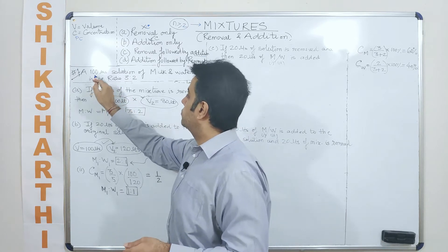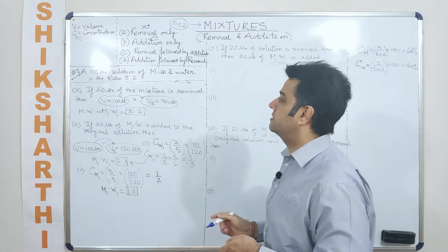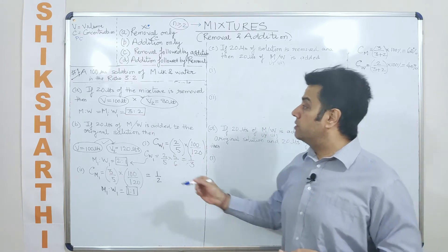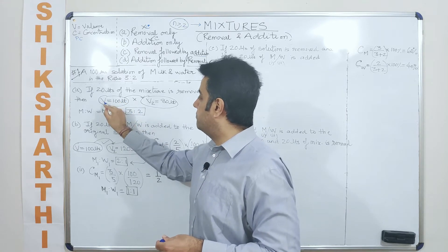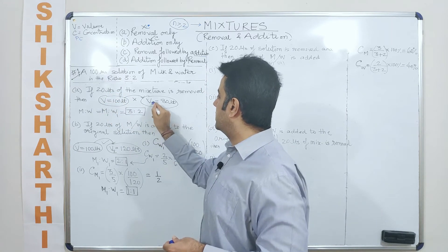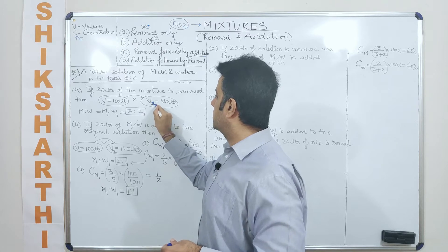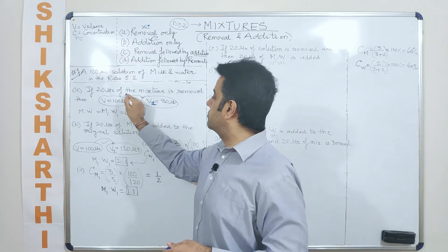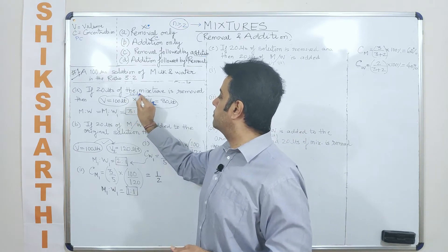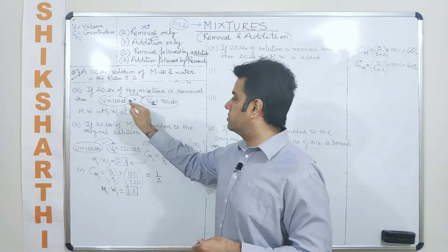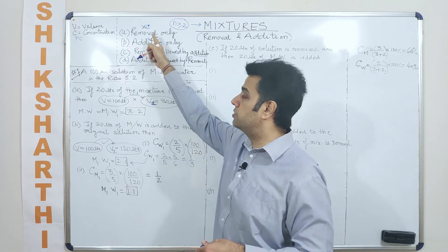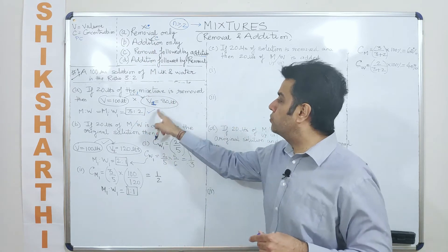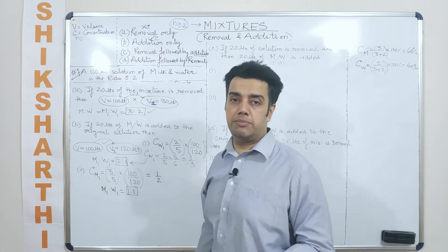In the first case, a 100-liter solution of milk and water is taken in the ratio 3:2. This is the original volume V. In V1, the first operation, we are removing 20 liters of the mixture. Removal does not change the concentration of the liquid — the ratio remains as it is, though the volume reduces.